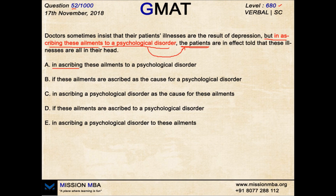So the sentence cannot start with 'in ascribing these ailments to a psychological disorder' as a modifier for the patients. For that reason, options A, C, and E are eliminated — in all three cases it seems like the patients are ascribing something, which is definitely wrong. Secondly, 'ascribing' always takes 'to,' not 'as' — that's the idiomatic rule. So option B is also gone because it uses 'ascribed as.' Therefore, option D is definitely correct.